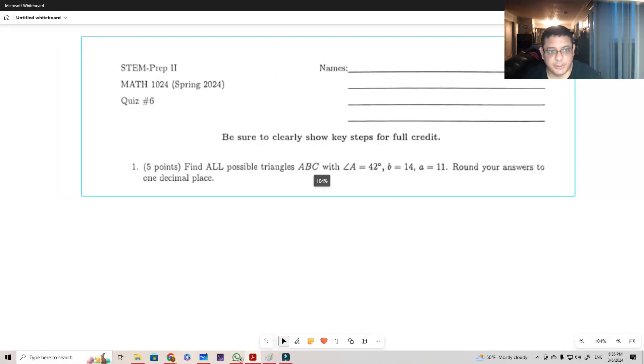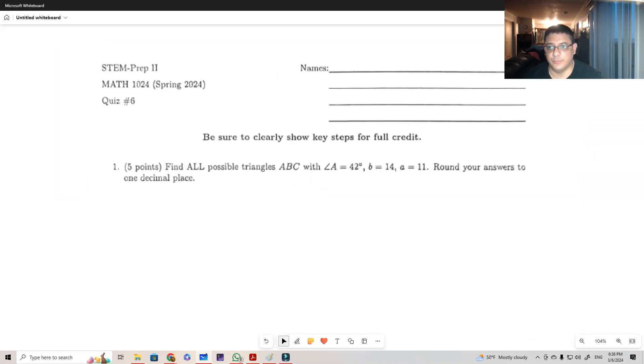Hello everyone, in this video I'm going to go over the solutions for question number six. First, we find all possible triangles ABC with angle A being 42 degrees, side b being 14, and side a being 11. Notice that it says all possible triangles, so that gives the possibility that you're going to get more than one, and that makes sense because I'm only getting one angle.